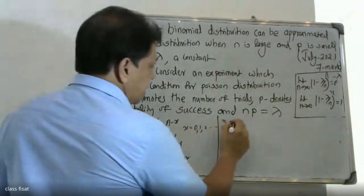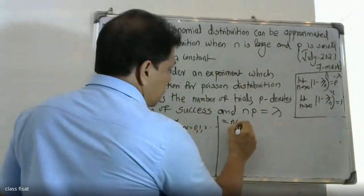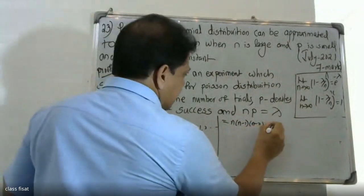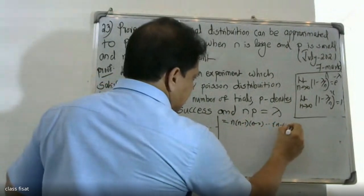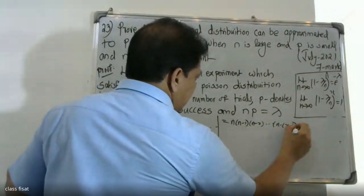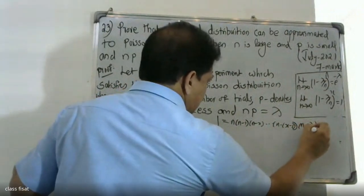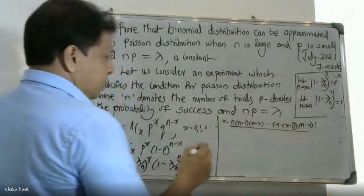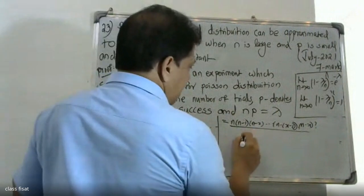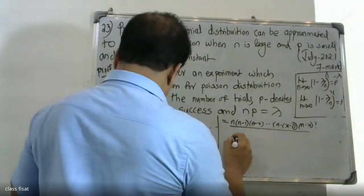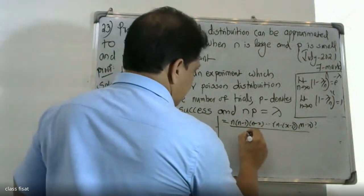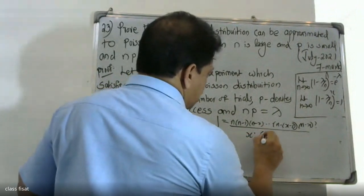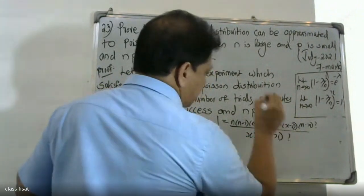I am going to expand nCx. The numerator is n into n minus 1, n minus 2, etcetera, n minus x minus 1, n minus x. So I am going to divide this by x factorial into n minus x factorial.